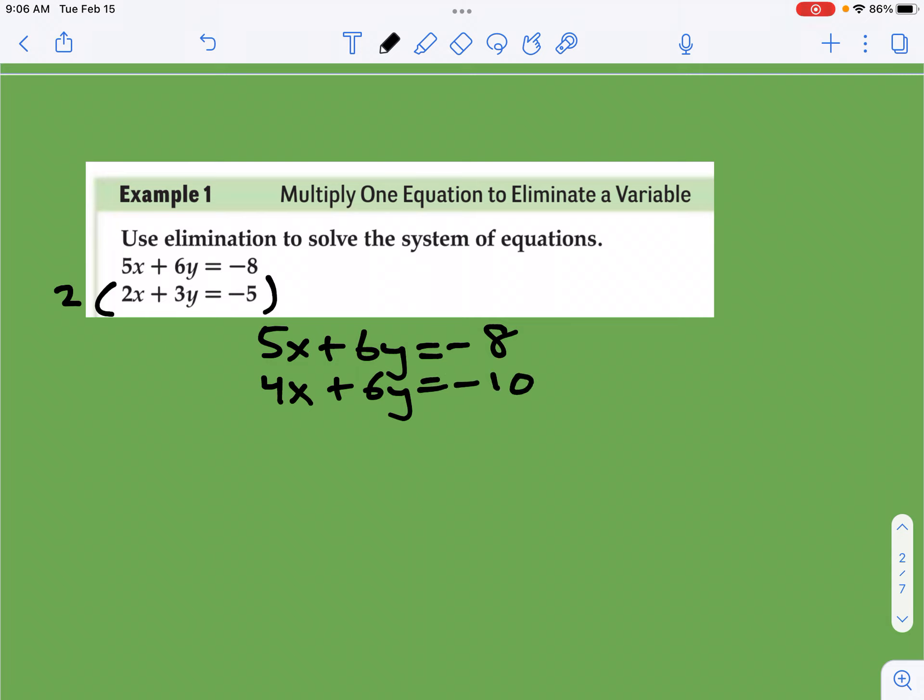And so now what I'm going to do is I'm going to say, oh, cool. I can subtract these from each other. Now if you wanted to, the other thing you could do is you could multiply this by negative 2 so that you make it the opposite. So let's do that and let's see what happens. I think you'll find it's a little easier. So that would make this negative 4x. That would make this negative 6y. And that would make this 10 positive. So I think I like that better. I think we should focus on that.